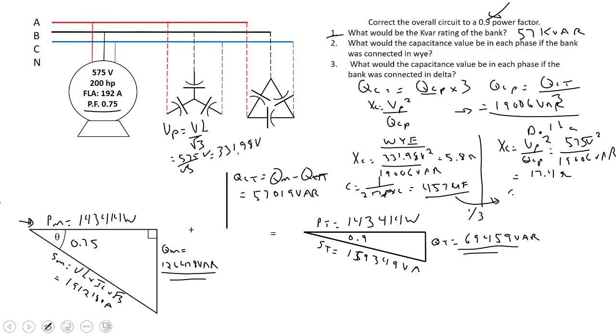And if we sub that into our capacitance formula, one over two pi F XC, we're going to see that it's about 152.5 microfarads. So yeah, it's basically a third of what we would have to have in Y.